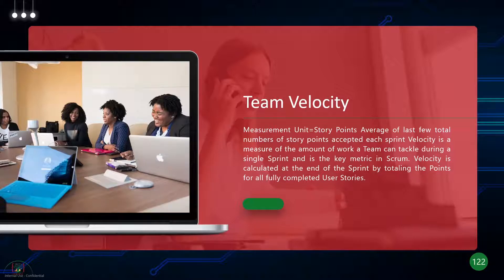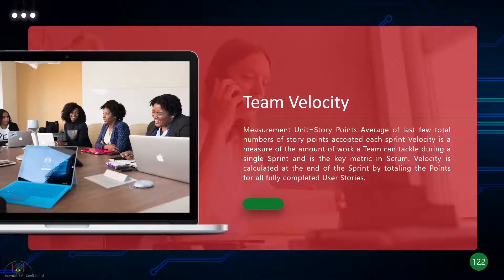Team velocity is basically the story point average calculated based on the last few sprints. It's the measure of work that a team can tackle during a single sprint. For example, if they're able to do 40 or 50 story points in a sprint, that is the team velocity. The best way is to find an average of the previous sprints.